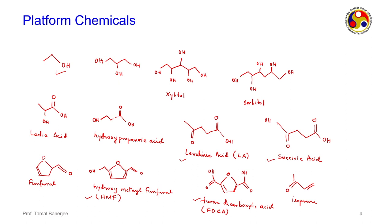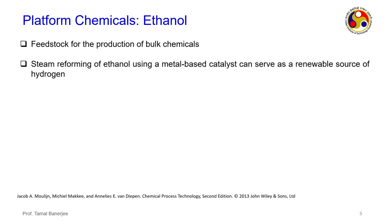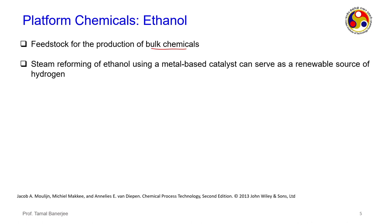Ethanol is a feedstock for the production of bulk chemicals. It can be converted to syngas by a metal-based catalyst, serving as a renewable source of energy. Syngas is normally formed from gasification of natural gas or coal — fossil fuels — but ethanol derived from biomass is renewable.